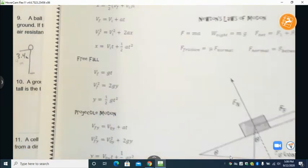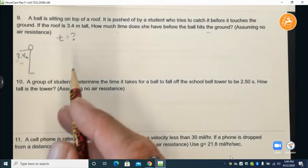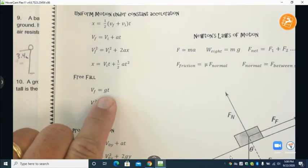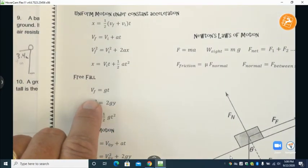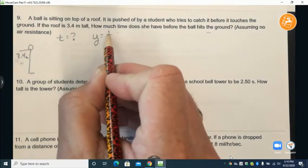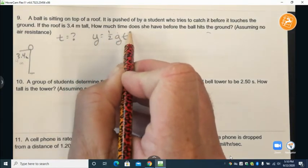So we'll start with one of those and we'll say we have two expressions that have time. We have one that has the final velocity in it which we do not have in this problem. We have one that has height and we do. It's a very common expression y equals one-half g t squared.